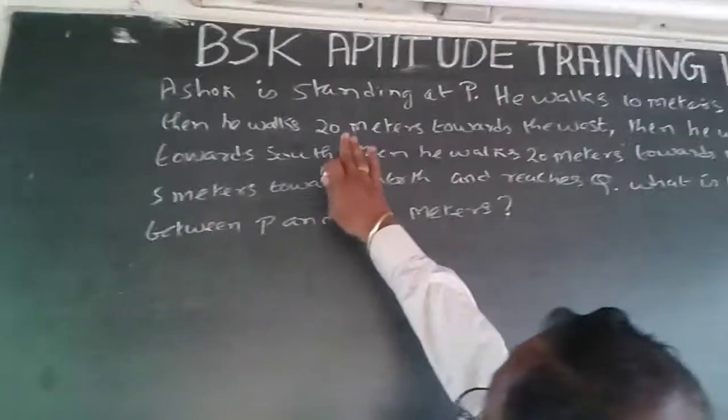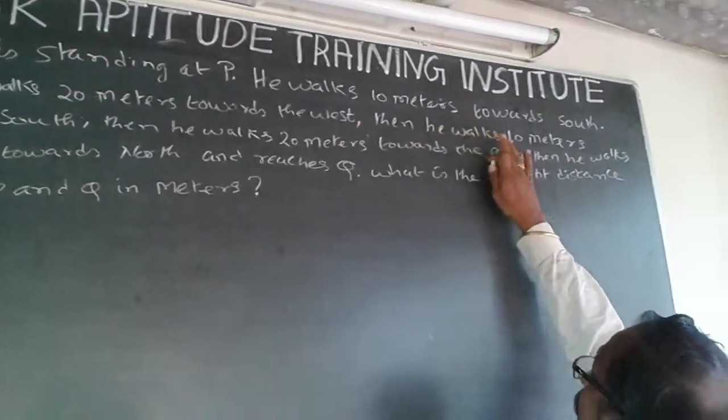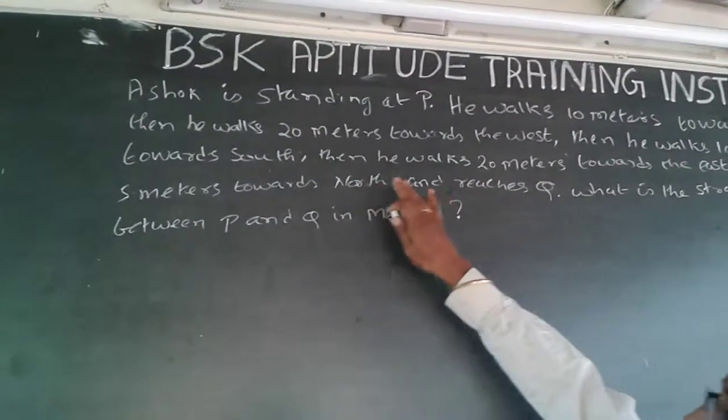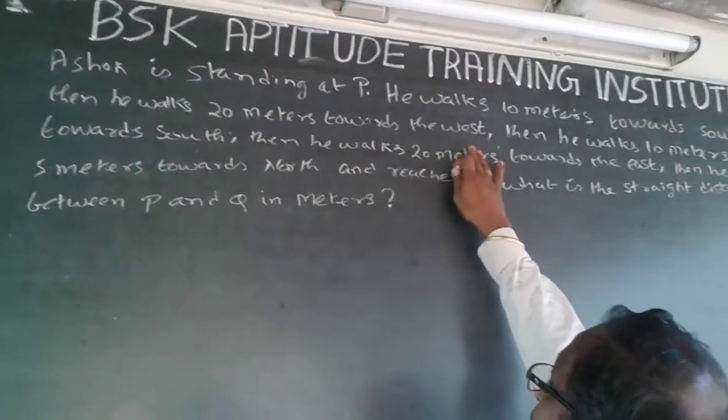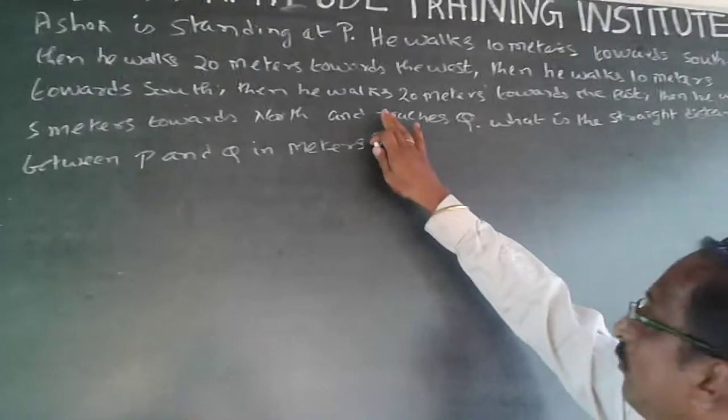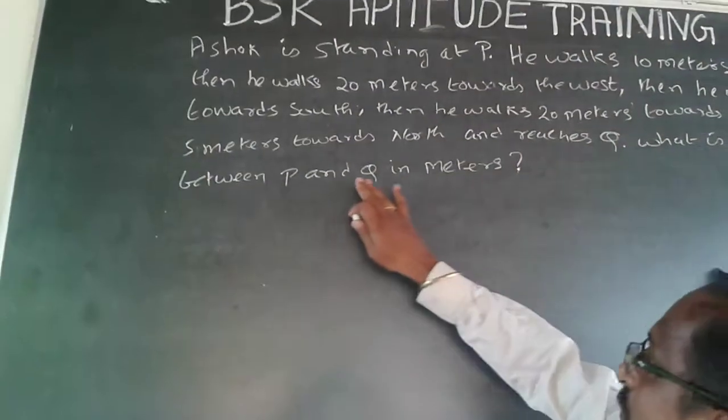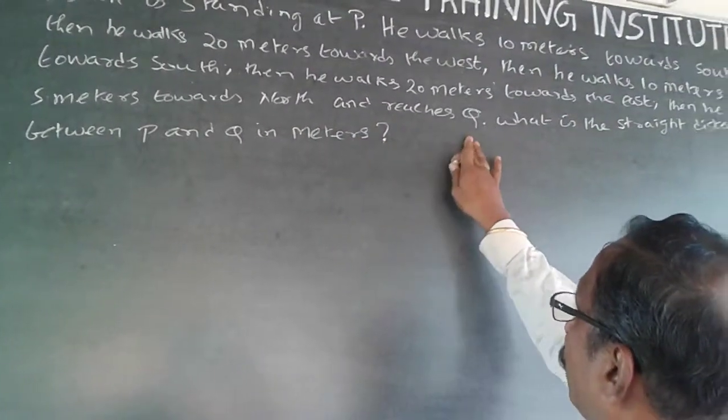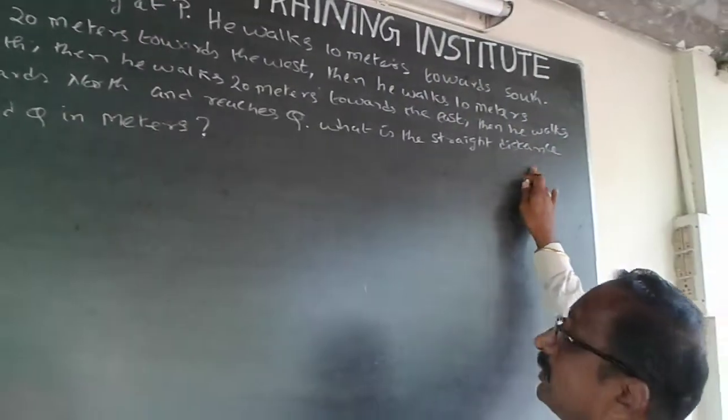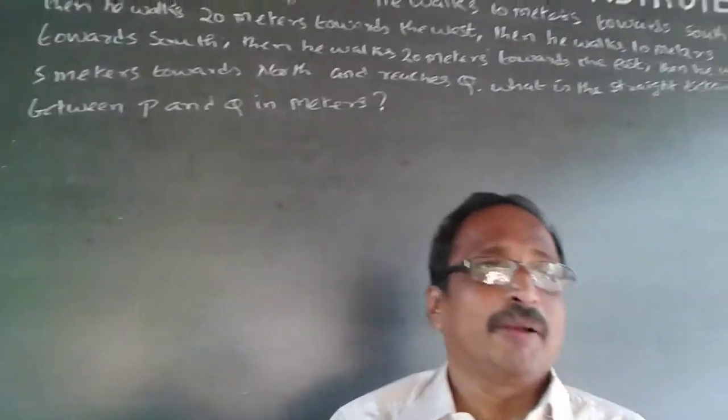The question is: Ashok is standing at P, he walks 10 meters towards south, then he walks 20 meters towards the west, then he walks 10 meters towards south, then he walks 20 meters towards the east, then he walks 5 meters towards the north and reaches Q. What is the straight distance between P and Q?